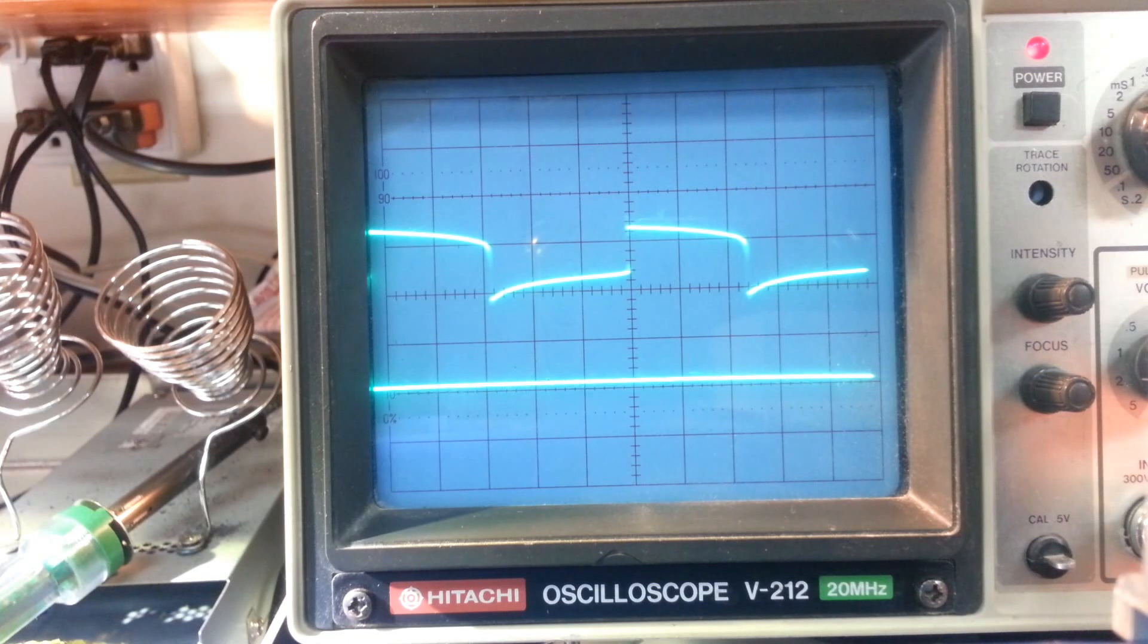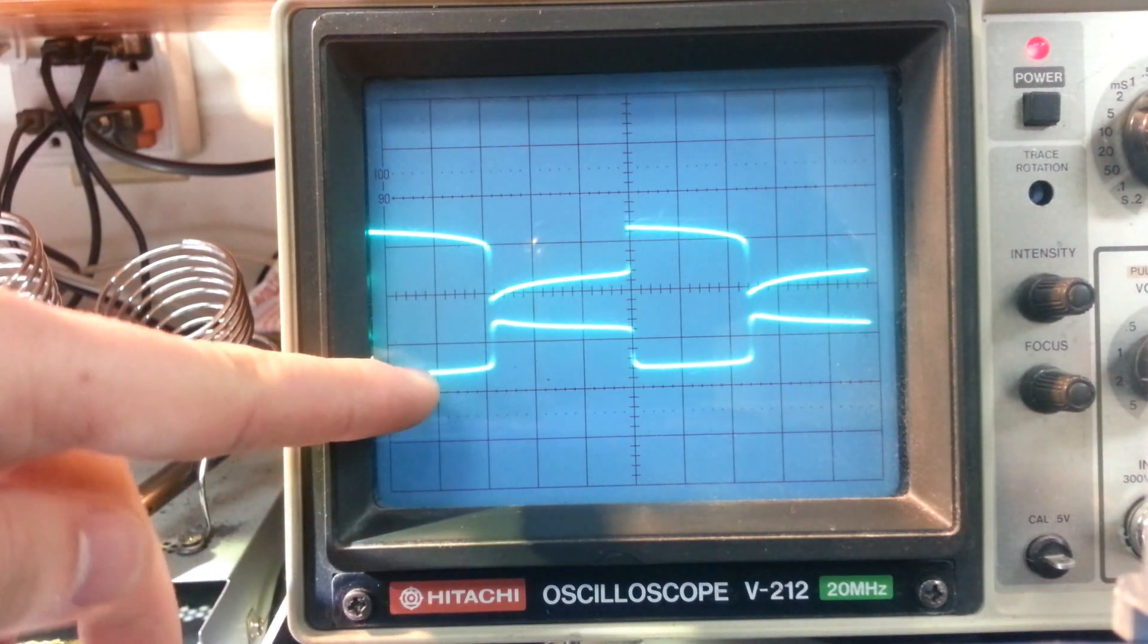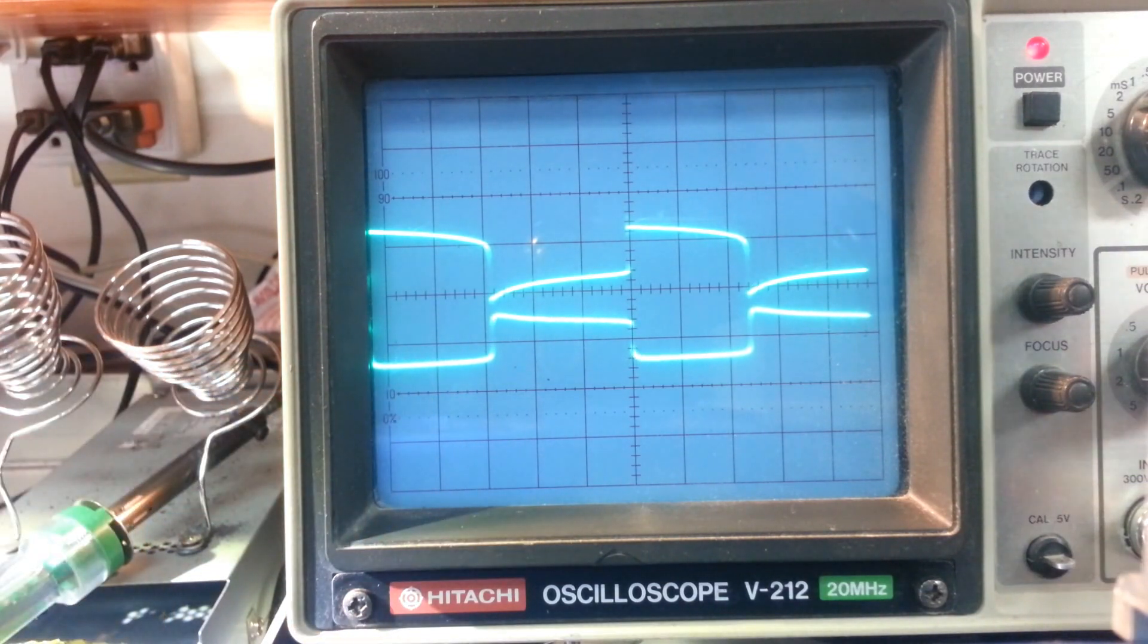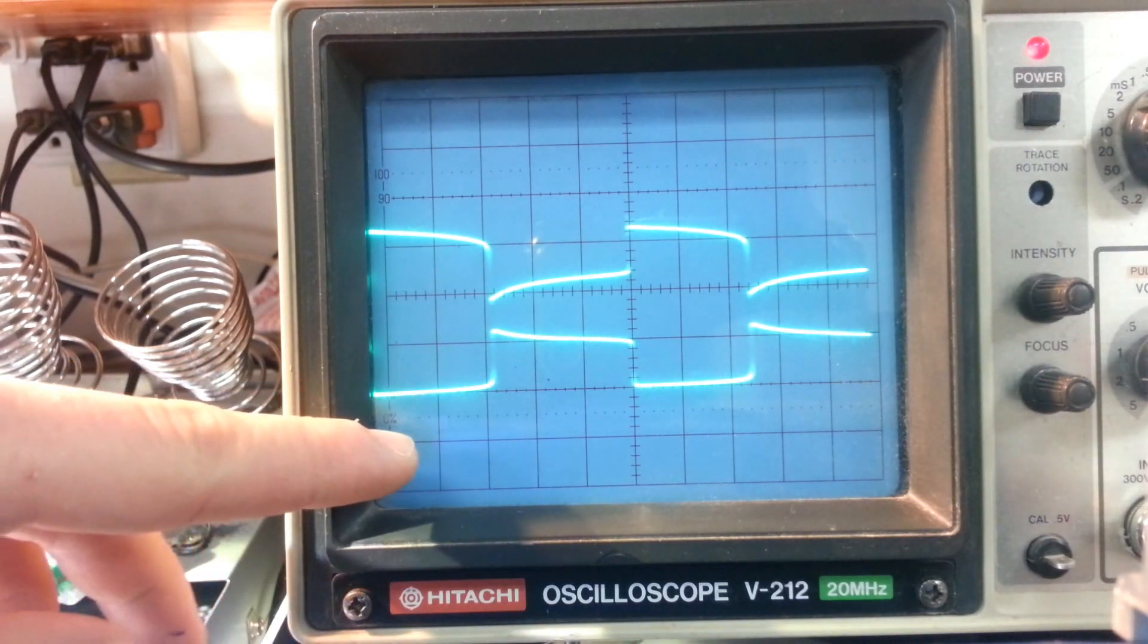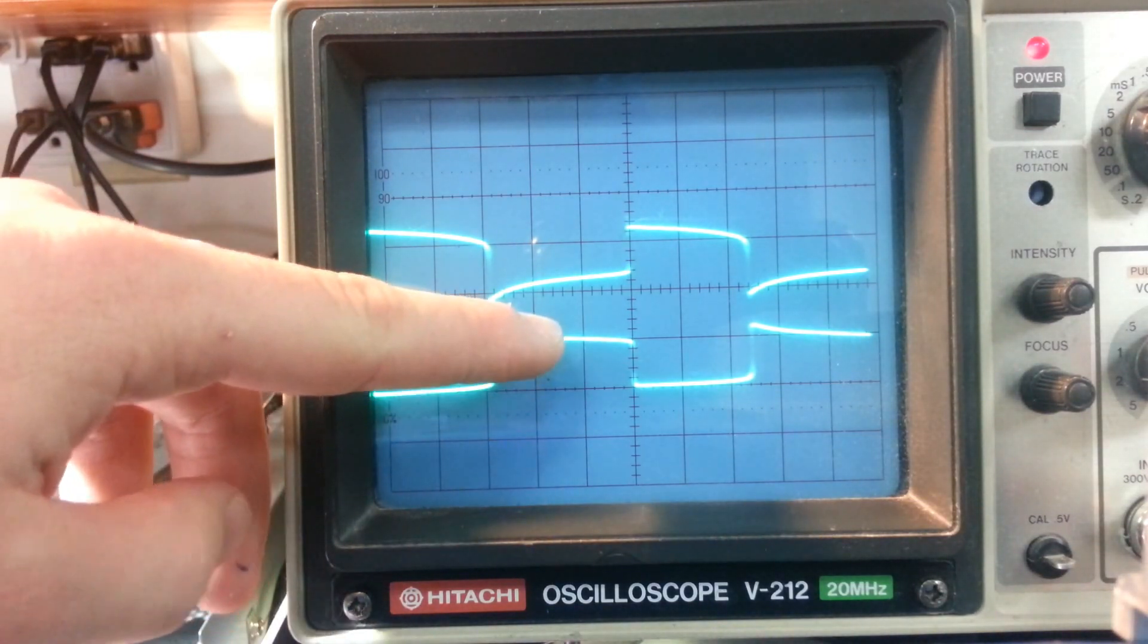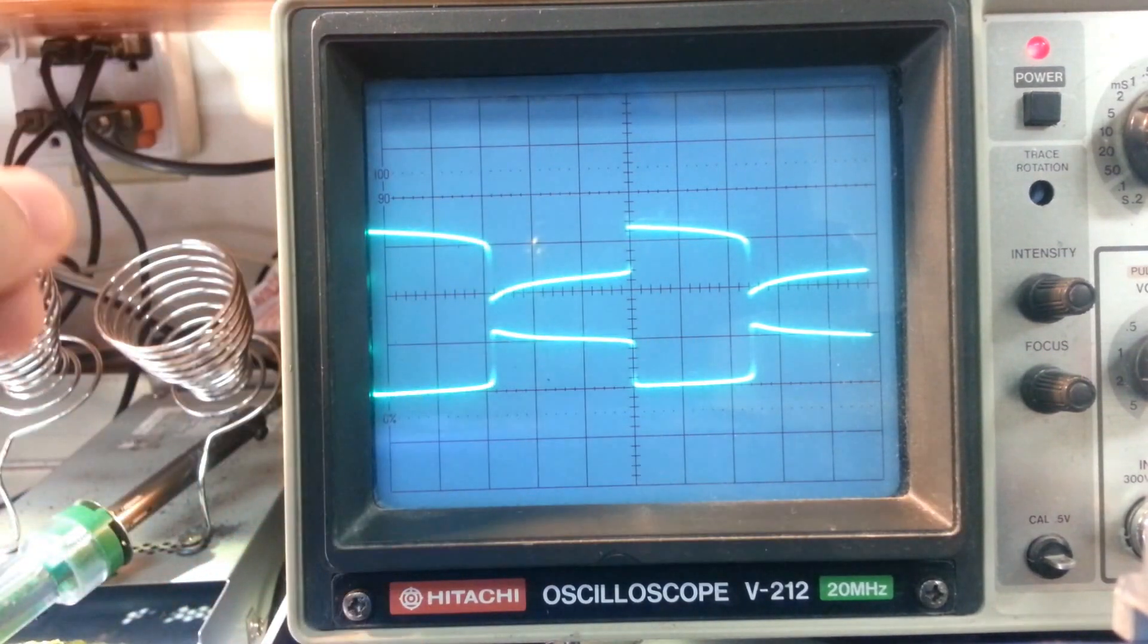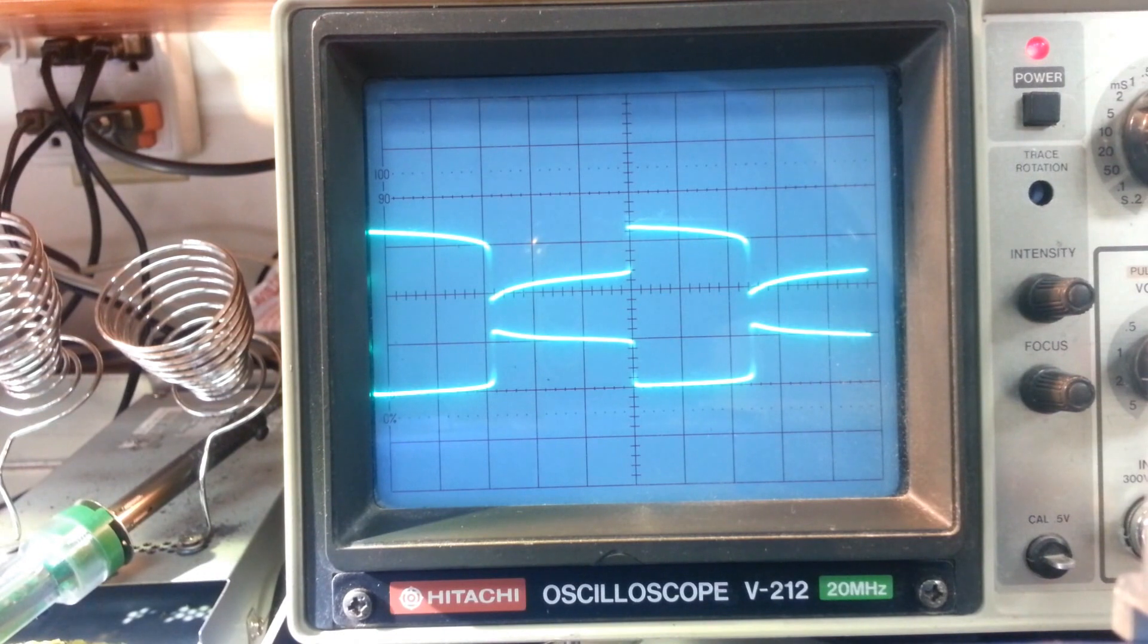So I turn on my channel 1. This is our base. And this is our collector. So what we can see here is it's low, high, and then low. So it's pretty much a square wave. And that's what we would expect from a Joule thief without any capacitors.